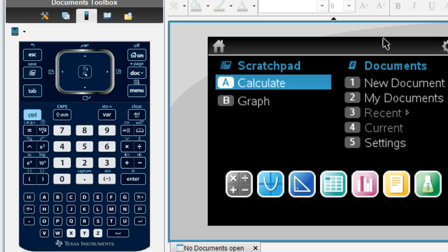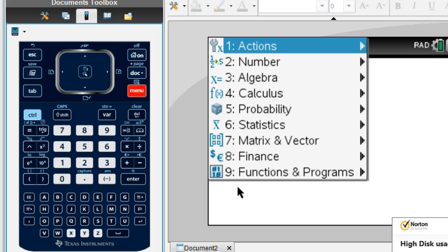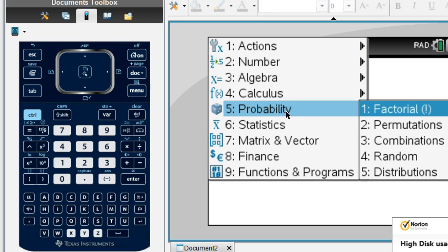Most calculators have a factorial button. If you take a look at this calculator, this is a TI Inspire. We'll start a new calculation. If you hit Menu and go under Probability, there's a factorial right there.